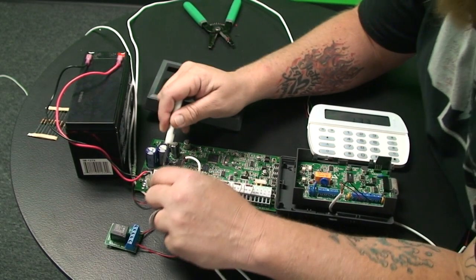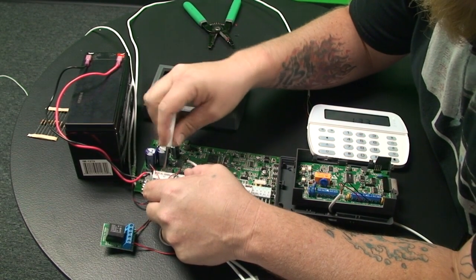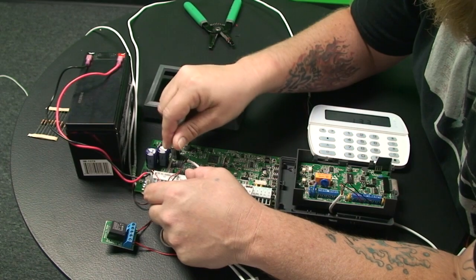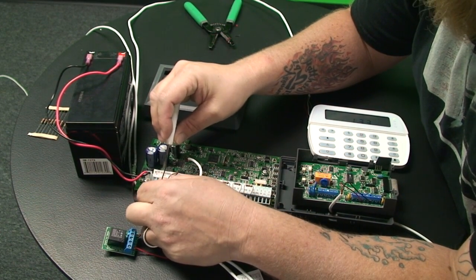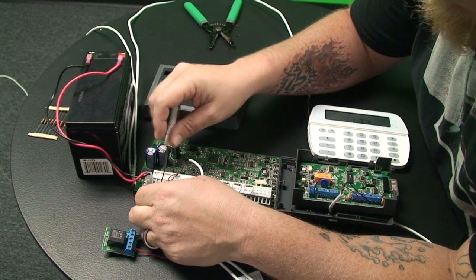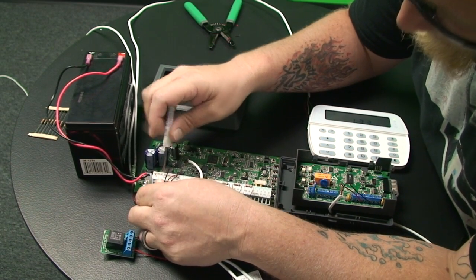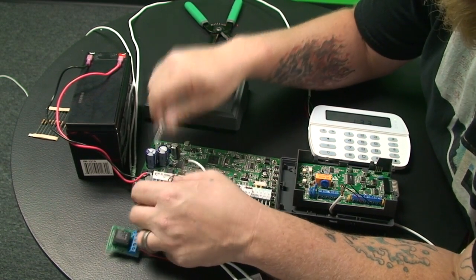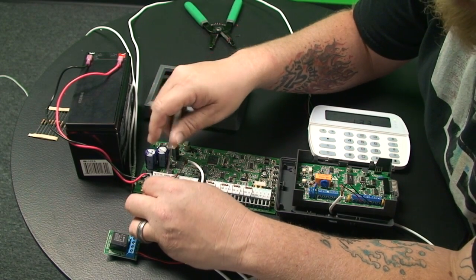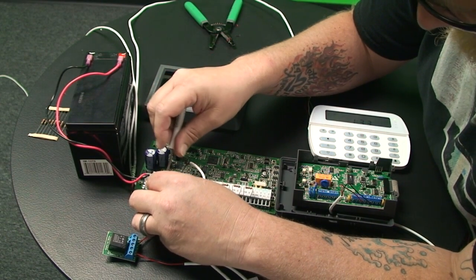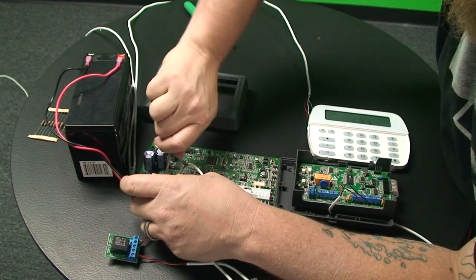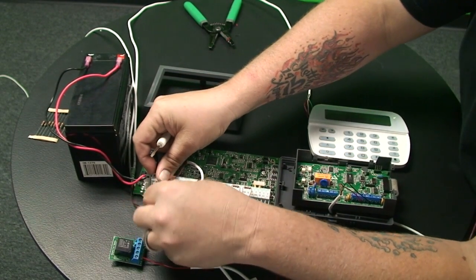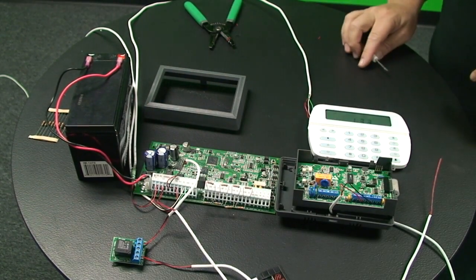So the auxiliary plus is going to be your positive line. We'll just loosen these up here on the board and then we get our positive line, put that in there, and then we'll have our negative line here. Make sure we get that all tightened up. So now this is going to provide us a consistent 12 volts of DC power.